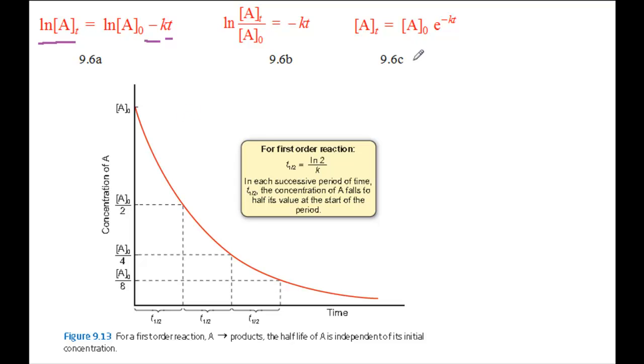Equation 9.6c takes the form of an exponential decay, y equals e to the power minus x. If you plot the concentration of A at different times during the reaction, you obtain an exponential decay curve, the red curve, in figure 9.13.